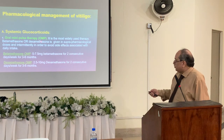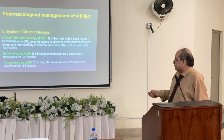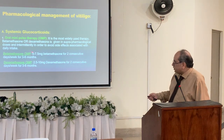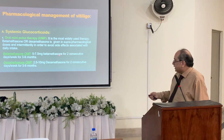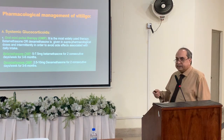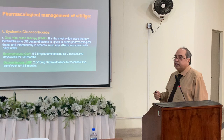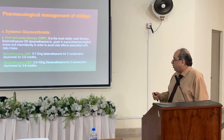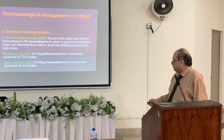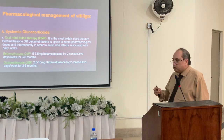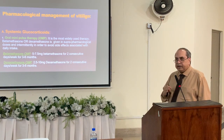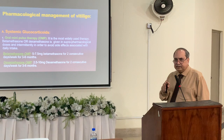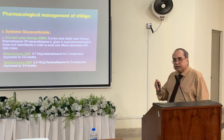The most commonly used therapy is oral mini-pulse therapy, where betamethasone or dexamethasone is given in high doses intermittently. Betamethasone is used at 5 to 7.5 mg for 2 consecutive days per week — like Saturdays and Sundays — for 3 to 6 months. Or dexamethasone 2.5 to 10 mg for 2 consecutive days per week for 3 to 6 months.